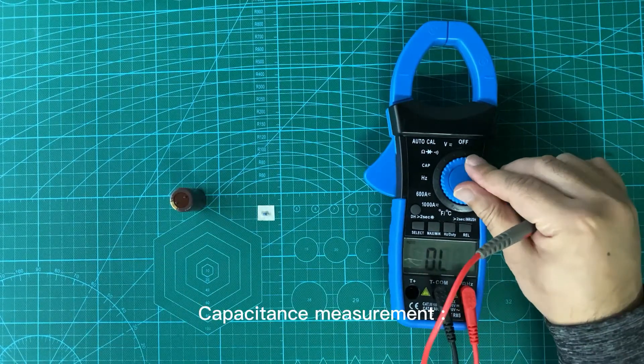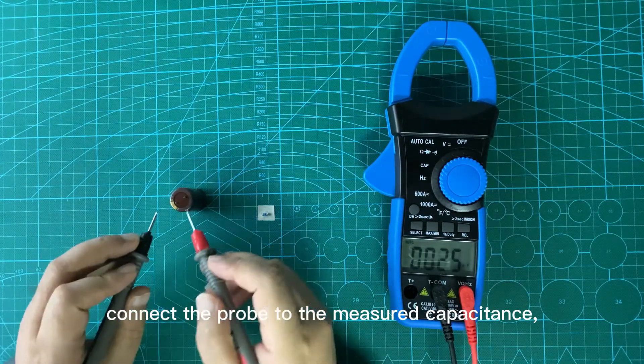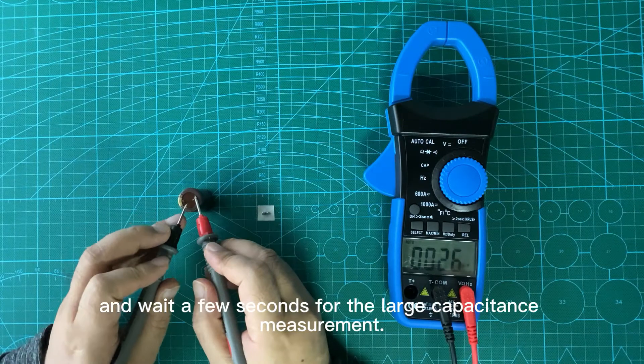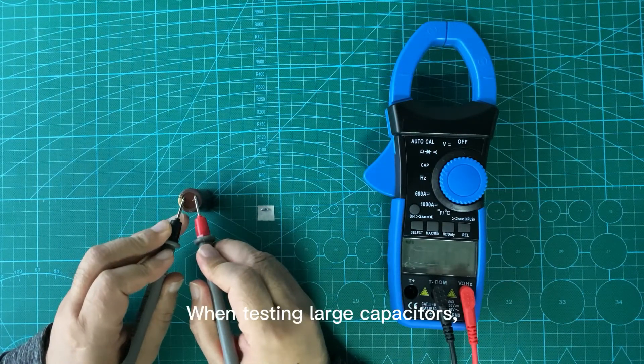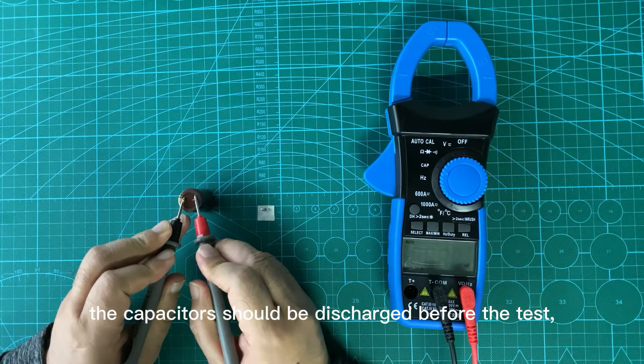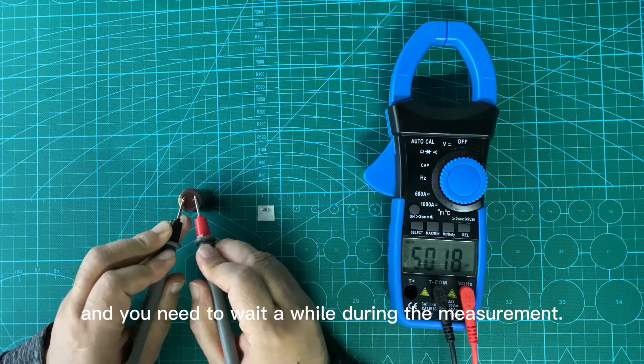Capacitance measurement: Set the rotary switch to the cap position. Connect the probe to the measured capacitance and wait a few seconds for large capacitance measurements. When testing large capacitors, they should be discharged before the test, and you need to wait during the measurement.